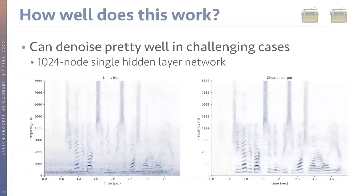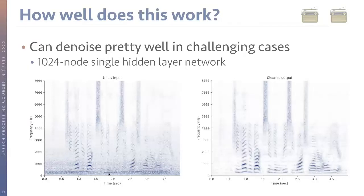Question: once we denoise the spectrogram, do we use the noisy phase or do something about the phase? Answer: we use the noisy phase. If a frequency bin is just noise and we set the magnitude to zero, the phase at that bin doesn't really matter. There can be phase artifacts when noise and voice share a bin, but they're usually not very noticeable — unless in reverberant scenarios. Later we'll move to a representation that doesn't use phase, so things will be different.